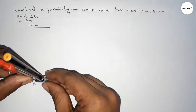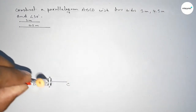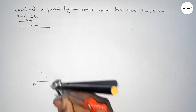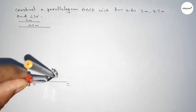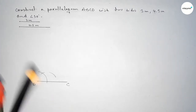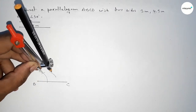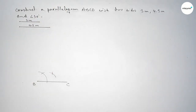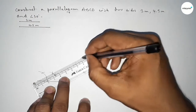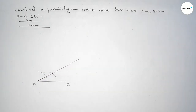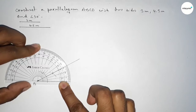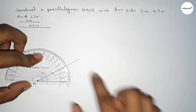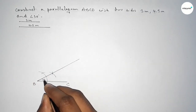Now we have to draw a 30 degree angle at point B. Putting the compass here and taking any length, drawing an arc. Putting the compass with the same length and cutting here, drawing another arc. Then with the same length, cutting so both curves intersect at a point. Joining this line to get the 30 degree angle — this is perfectly a 30 degree angle.